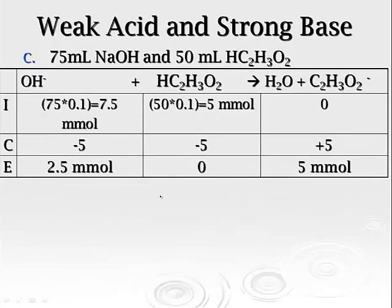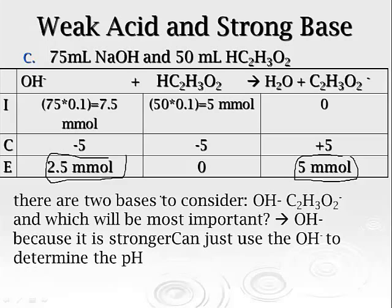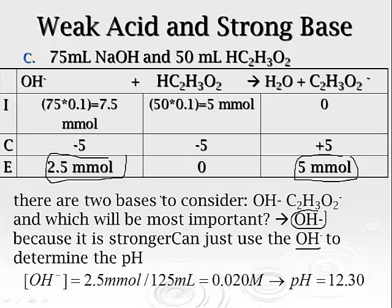And then we're going to get past the equivalence point. So now the only thing that's going to be left here to influence it is the hydroxide as well as the acetate ion. There are two bases. The first one that's the most important is hydroxide because it's strong. So at this point we can just use the hydroxide value to figure it out.